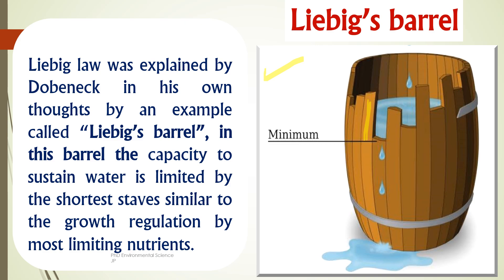The water level inside the barrel represents the growth potential of the organism or population. It is determined by the shortest stave, which symbolizes the limiting nutrient — the nutrient in shortest supply. The shortest stave, labeled as 'minimum,' is the critical limiting factor regardless of the height of the other staves. The barrel can only hold water up to the level of the shortest stave; if the shortest stave is too low, the barrel will leak and water will be limited.